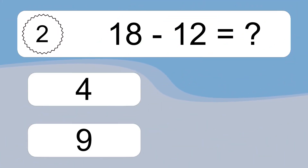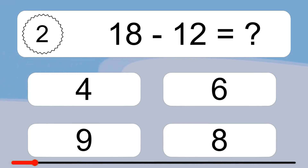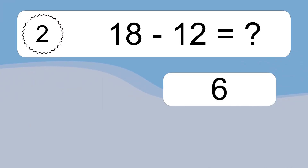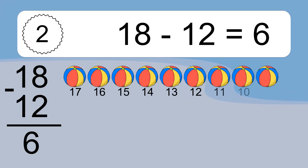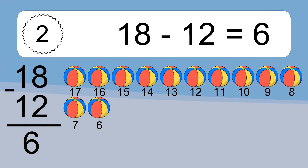18 minus 12 equals what? 18 minus 12 equals 6. Let's count it. 17, 16, 15, 14, 13, 12, 11, 10, 9, 8, 7, 6.